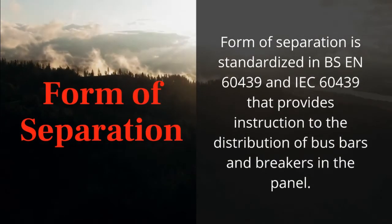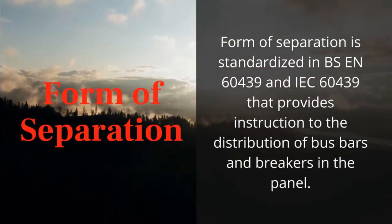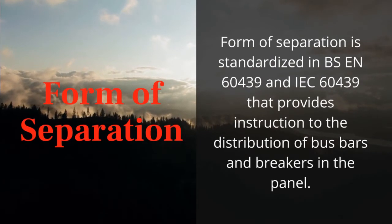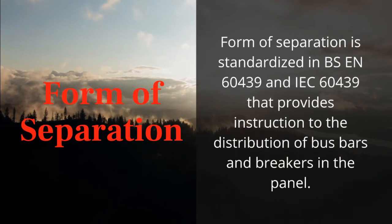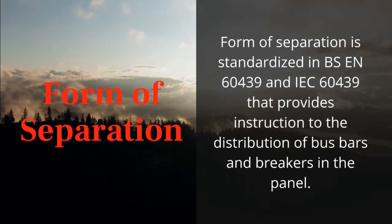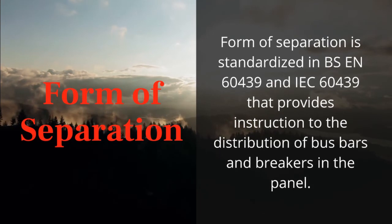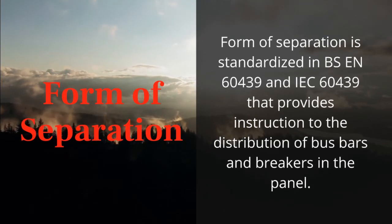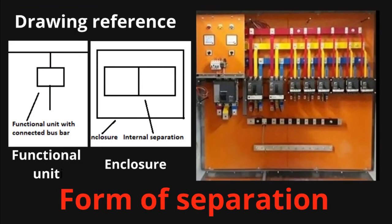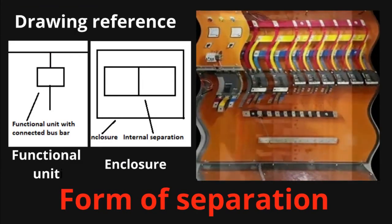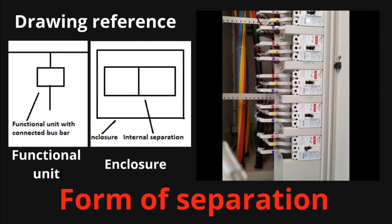Form of separation is standardized in BSEN 60439 and IEC 60439, which provides instruction on the distribution of busbars and breakers in the panel. The drawing refers to key symbols to follow functional units in the panel, and pictures show the different models of form of separation.